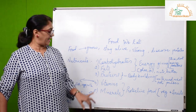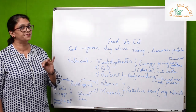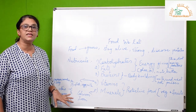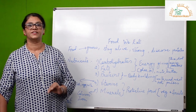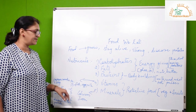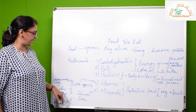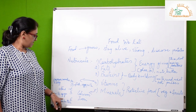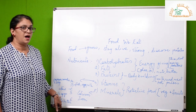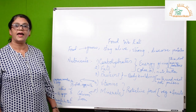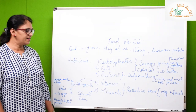Vitamin B is found in milk, eggs, and fish. Vitamin C is found in all citrus fruits. Vitamin D is found in milk and eggs. Vitamin E is present in almonds, butter, and spinach.